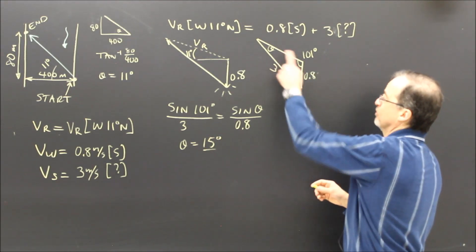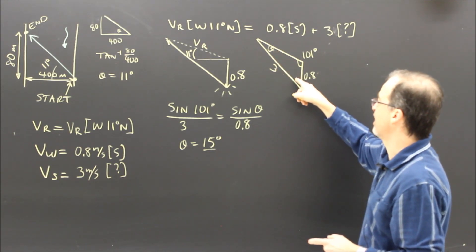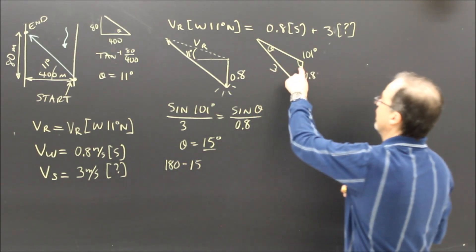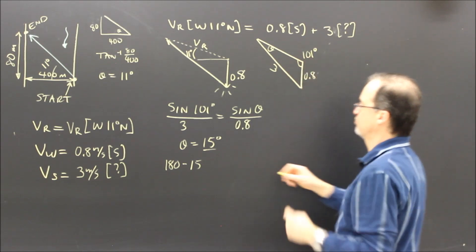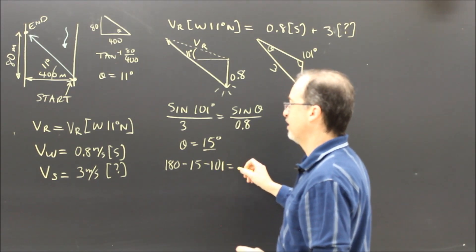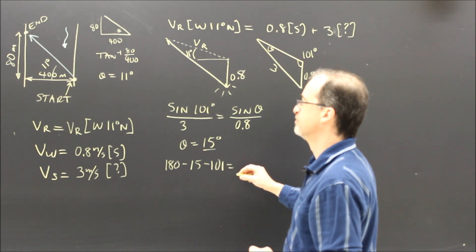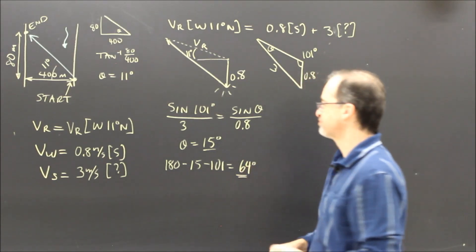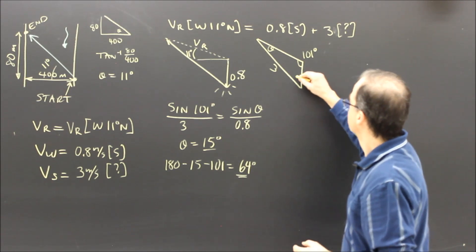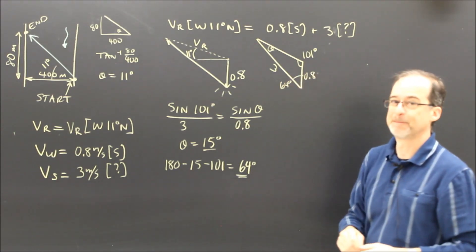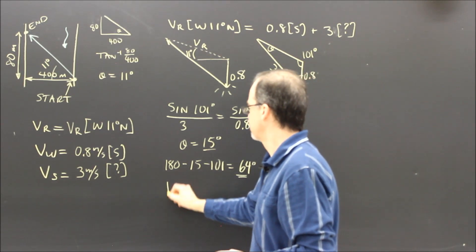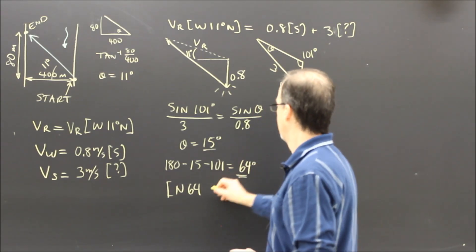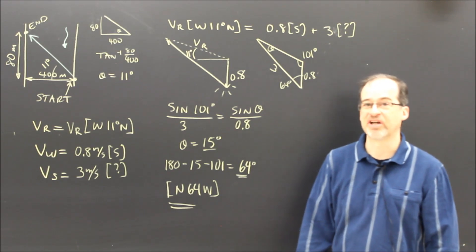That angle is 15 degrees. The angle I really want is 180 minus 15 minus 101, which equals 64 degrees. So I now know that angle is 64 degrees, and the direction I have to swim is north 64 west.